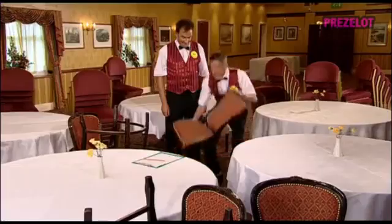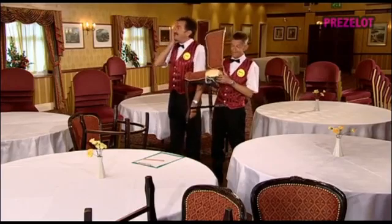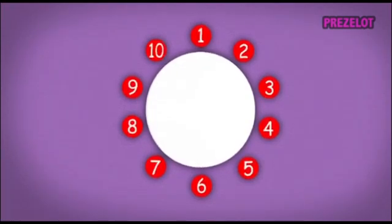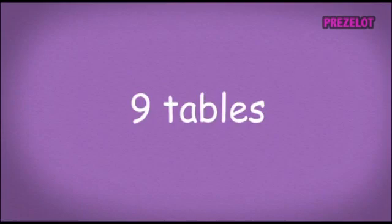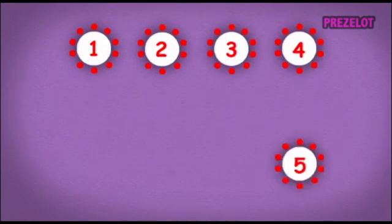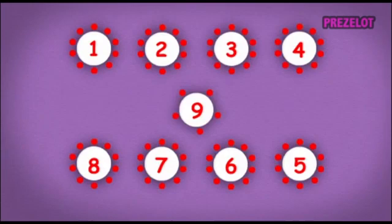There is a bit of a problem. What? Now we've only got 84 chairs. So let's work out the table plan for 85 guests. If each table seats 10 guests, they'll need 9 tables altogether — 8 tables with 10 guests at each one, and 1 table with 5 guests.